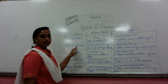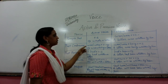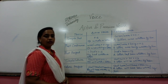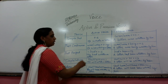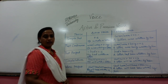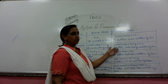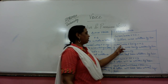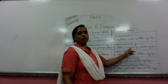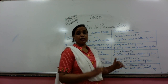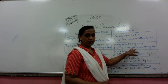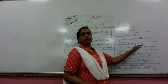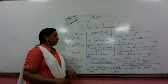For past continuous tense, the structure uses was/were + verb-ing. For example: 'He was writing the letter.' In passive voice, take the object first — 'A letter' — then 'was' (singular subject), then 'being' for continuous form, then past participle: 'A letter was being written by him.'